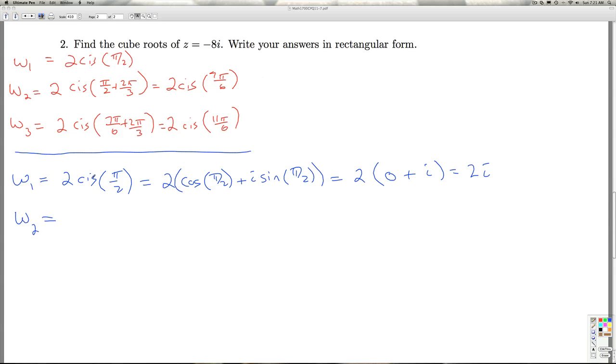And W2 is 2 cis 7 pi over 6, which is 2 times cosine 7 pi over 6 plus i sine 7 pi over 6, which is 2 times, the cosine of 7 pi over 6, that's negative square root 3 over 2, plus i sine 7 pi over 6, that's minus 1 half. And so I get negative square root 3 minus 2i.